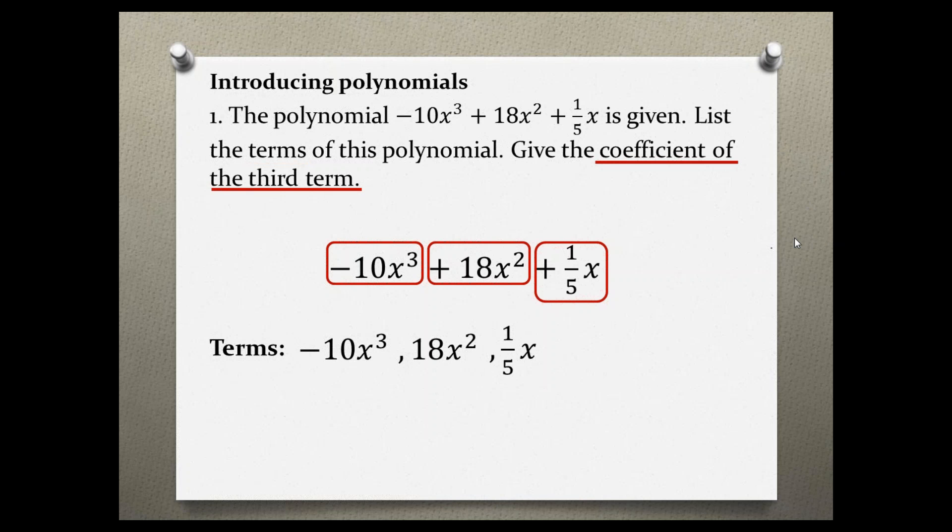Now we are asked to give the coefficient of the third term. Let's first explain what is a coefficient. A coefficient is the number or numeric value in each term. For example, in our case, the coefficients are negative 10, 18, and one fifth.